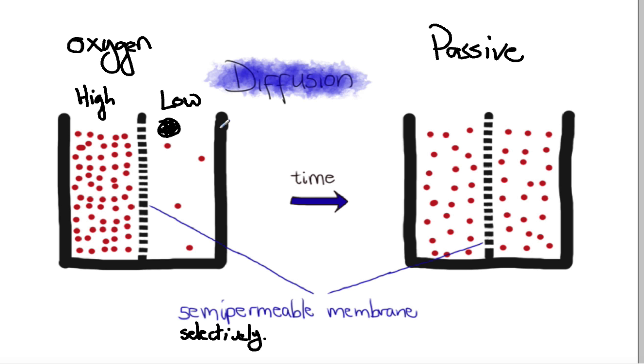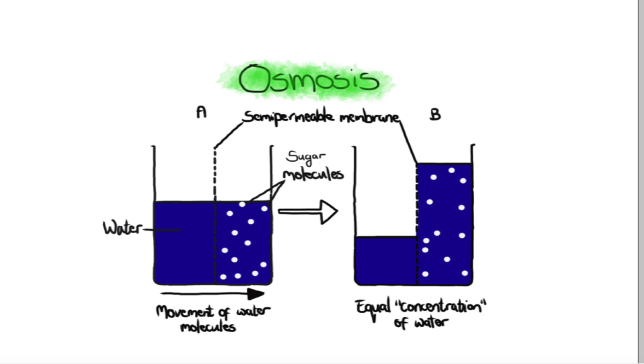Just to recap: diffusion is passive, it's the movement of particles from an area of high to low concentration across a selectively permeable membrane. Osmosis is the specific diffusion of water across a selectively permeable membrane, and if you're going to do experiments on that, it'll probably involve visking tubing.